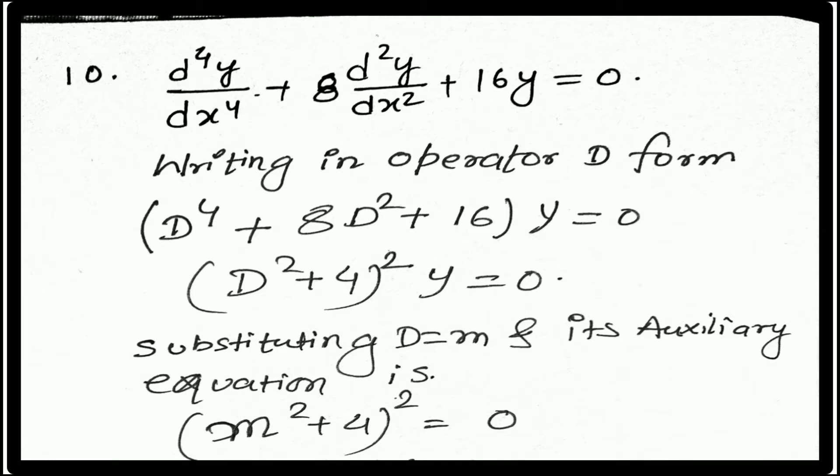Then we have (D² + 4)² formula, then we have (D² + 4)² y = 0. Now we have the auxiliary equation. Substitute D = m and the auxiliary equation is (m² + 4)² = 0.